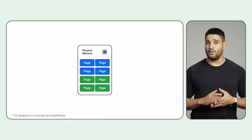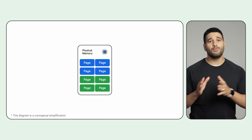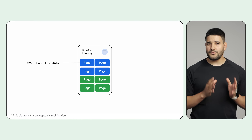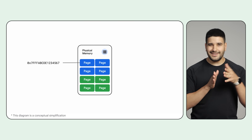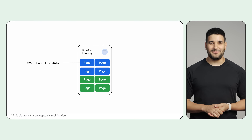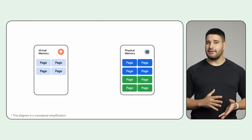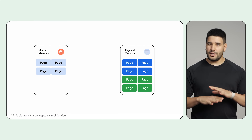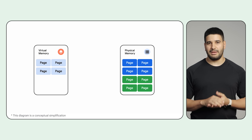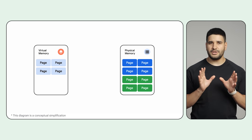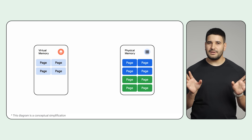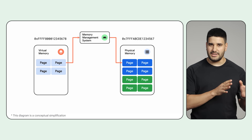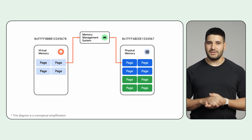When an app needs more memory, more memory pages will be allocated. Each memory page will have its own physical address to locate it inside the physical memory. But your app doesn't directly access the physical memory. Instead, it will interact with an abstraction layer we call virtual memory, which keeps process memories isolated from each other.